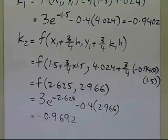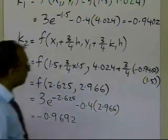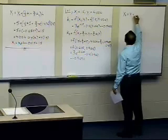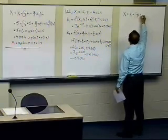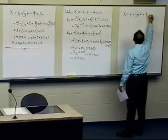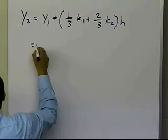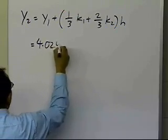So now we have the value of k1 and k2, and we're going to use these values to calculate y2. So y2 is y1 plus (1/3 k1 plus 2/3 k2) times h. y1 we have calculated from the previous step which is 4.024,